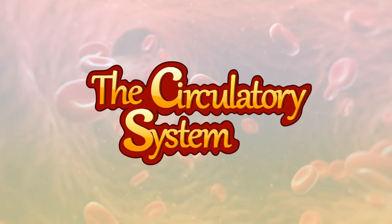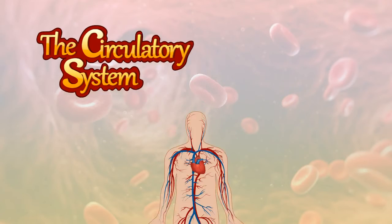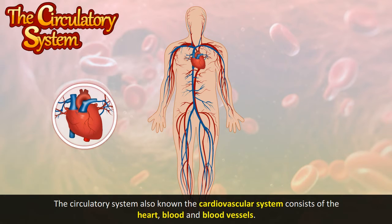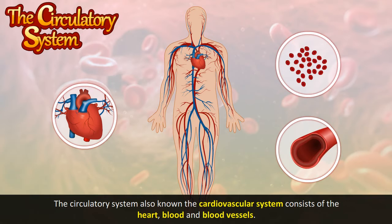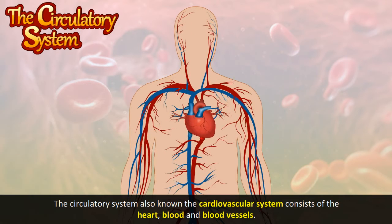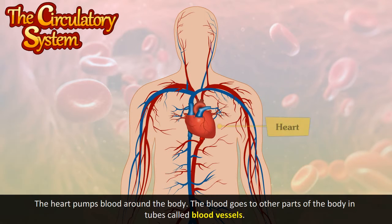The circulatory system, also known as the cardiovascular system, consists of the heart, blood, and blood vessels. The heart pumps blood around the body. The blood goes to other parts of the body in tubes called blood vessels.